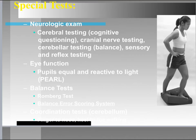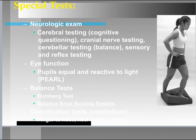We can test anterograde and retrograde amnesia. Retrograde questions include: Do they know their birth date? Do they know where they live? Do they know who dropped them off? For anterograde, give them three things to remember — like apple, pencil, eraser — and ask them to repeat it a minute later. We also assess eye function, ensuring pupils are equal and reactive to light. If pupils are fully blown, it indicates a serious head injury requiring immediate referral.